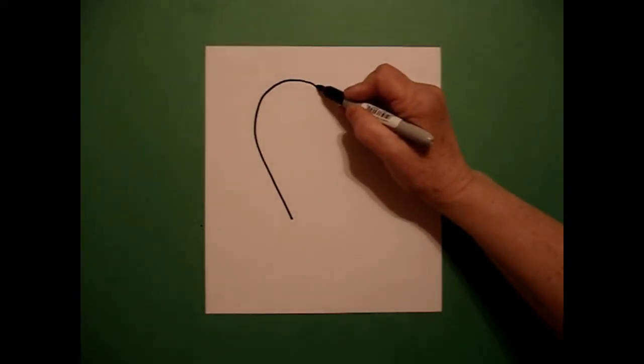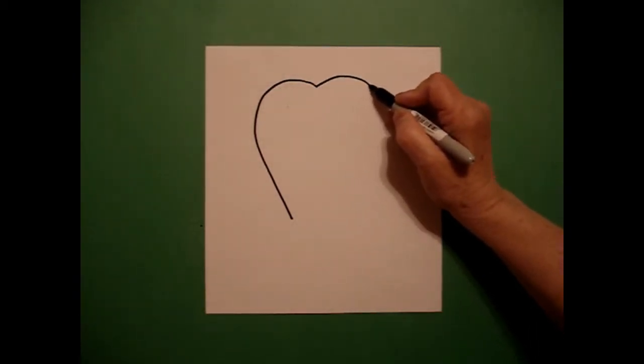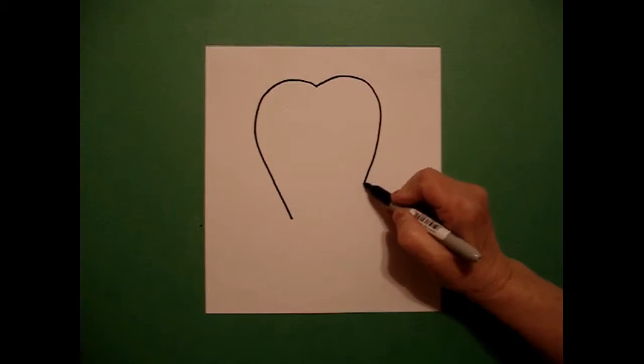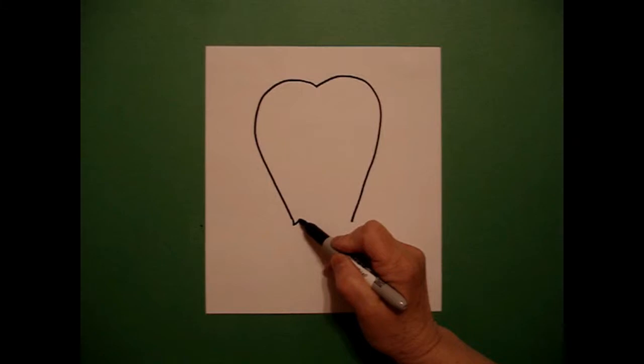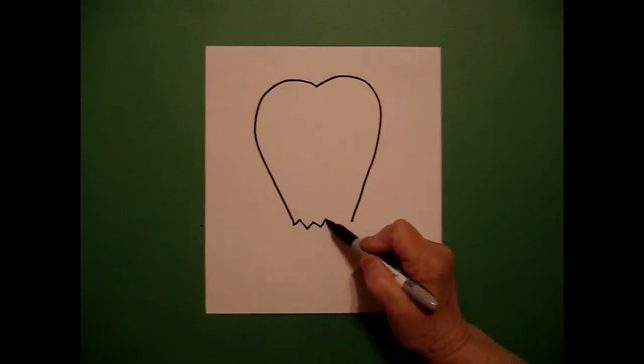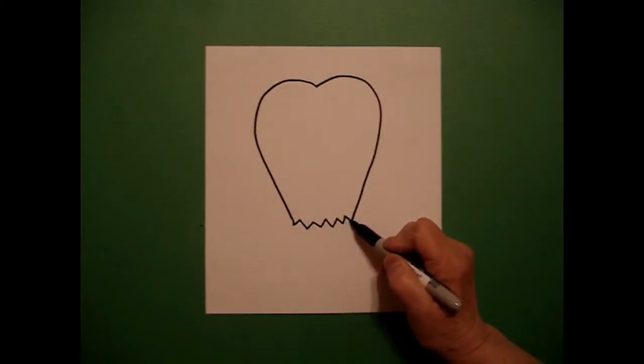Go back to the dot, draw a slightly curved line out, down, and stop. At the bottom on the left, I go zigzag, zigzag, zigzag, zigzag, zigzag, connect.